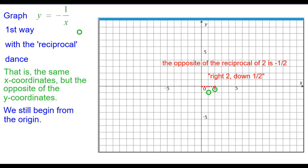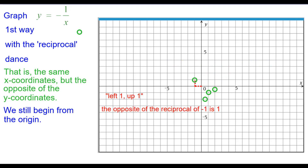Right 2 down 1 half — the opposite of the reciprocal of 2 is negative 1 half. And right 1 half down 2 because the opposite of the reciprocal of 1 half is negative 2. Left 1 up 1 — the opposite of the reciprocal of negative 1 is positive 1. Left 2 up 1 half — the opposite of the reciprocal of negative 2 is positive 1 half. And finally left 1 half up 2 — the opposite of the reciprocal of negative 1 half is positive 2.